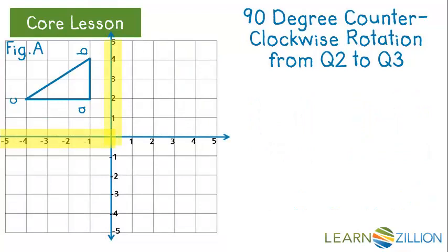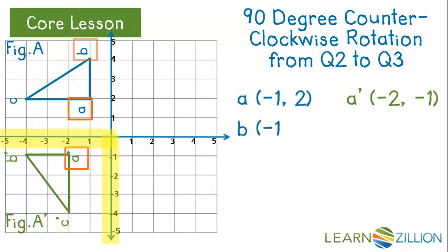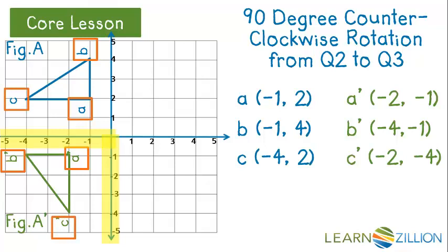Our original figure is in quadrant 2 and is comprised of negative x and positive y values. The image in quadrant 3 will need to be comprised of negative x and negative y values. Look at the coordinates of the image and the pre-image. Do you see a pattern? You probably noticed that the x and y switch position and what used to be the y value changed signs. Take a second and confirm that pattern by comparing the coordinates. Our hypothesis is holding.